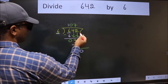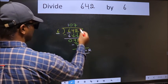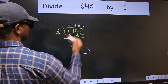No more numbers to bring down. So we stop here. This is our remainder and this is our quotient.